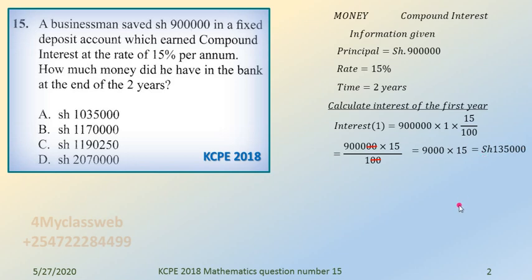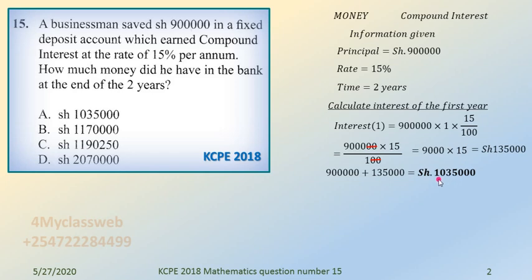After calculating the first year's interest, you take that interest and add it to the principal to get a new principal. You take 900,000 and add 135,000 to get a new principal of 1,035,000 shillings. Now you go on to calculate the interest for the second year.